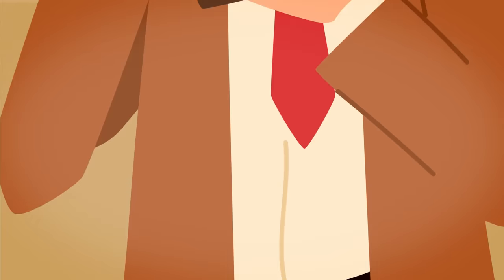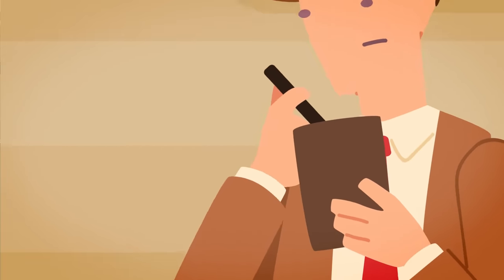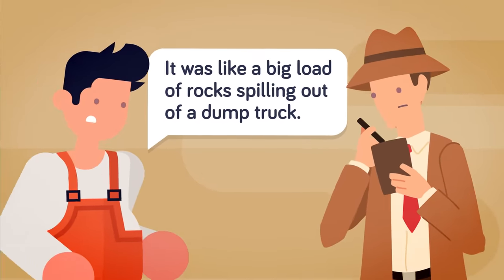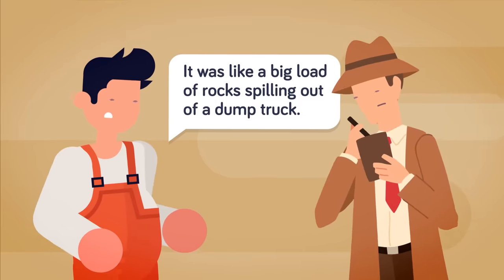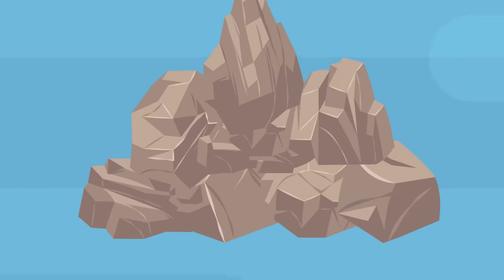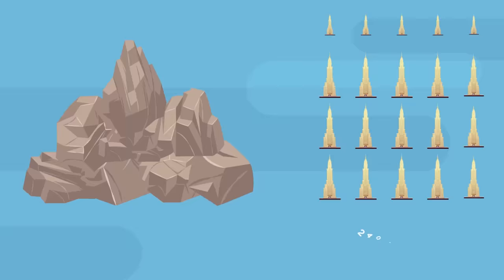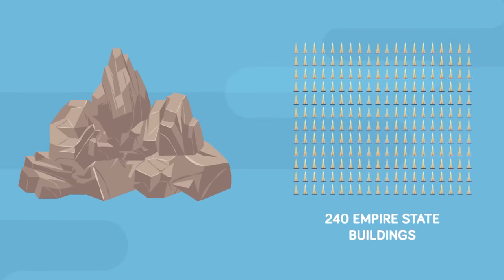When Bill Swanson felt the swaying of the boat, he too got up to see what was happening. He later described what he saw next was like a big load of rocks spilling out of a dump truck. That might have been an understatement, because the rocks that hit the water would have weighed as much as 240 Empire State Buildings.